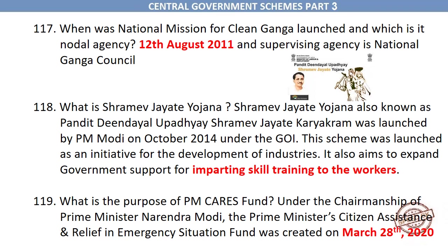When was the National Mission for Clean Ganga launched and which is its nodal agency? It was launched on 12th August 2011 and its supervising agency is the National Ganga Council. Shramev Jayate Yojana, also known as Pandit Deendayal Upadhyay Shramev Jayate Karyakram, was launched by PM Modi in October 2014 under the Government of India as an initiative for the development of industries. It also aims to expand government support for imparting skill training to workers.